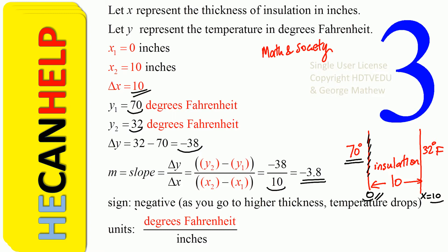So what is the sign of our slope? Negative. What is the unit? Degrees Fahrenheit per inch. So we have the slope.